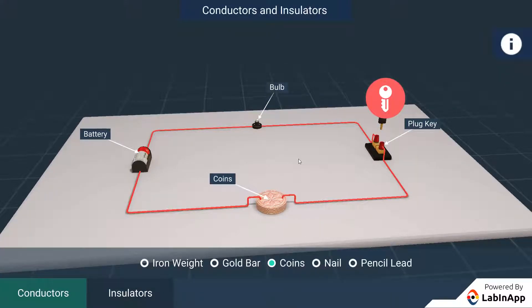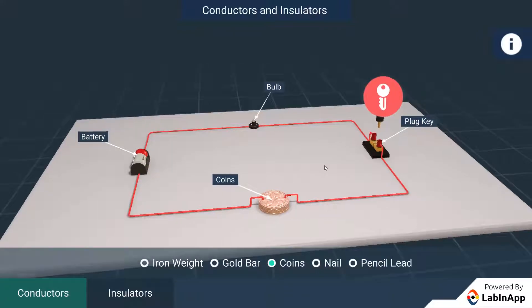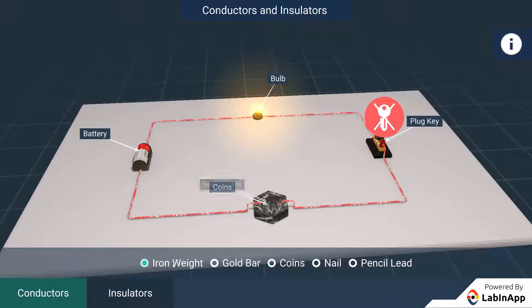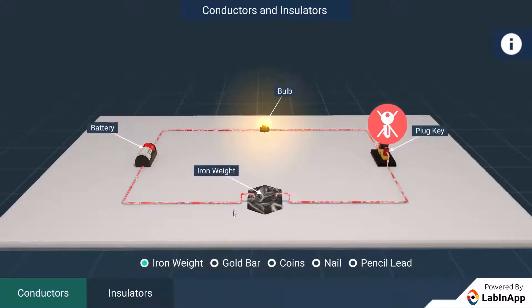With an iron block in the circuit, close the key and observe. We can see that the current flows in the circuit through the iron block and the bulb glows.